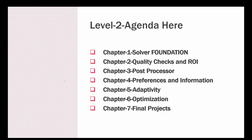Here is the agenda. We have a total of 6 different chapters, with the final one covering your projects. Chapter 1 is about the solver foundation, followed by quality check and return on investment (ROI), then the post processor, then preferences and information, and finally the advanced options — adaptivity and optimization — before applying everything in the final project chapter.